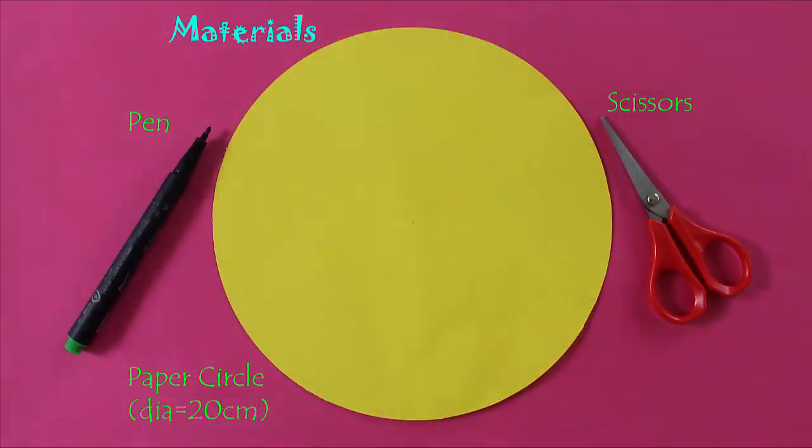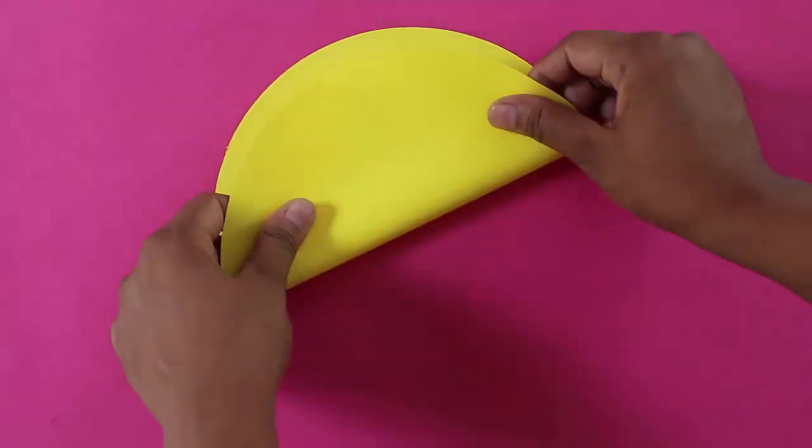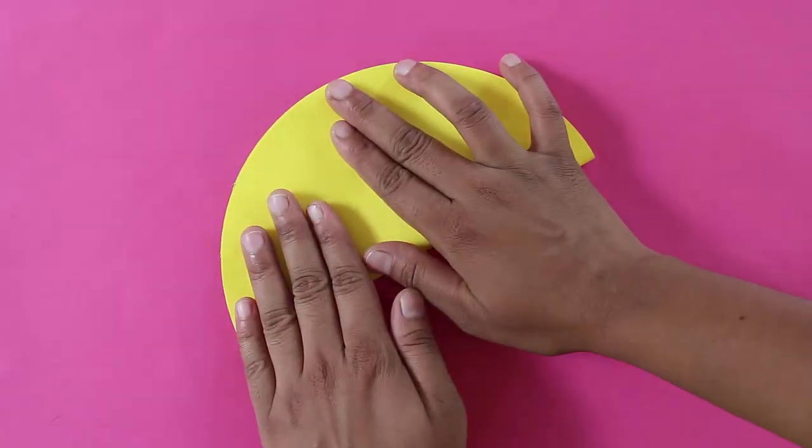For making this, take a circle of diameter 20 cm. Fold the circle along its diameter into half.